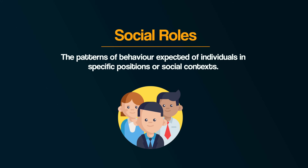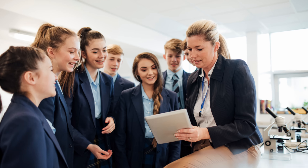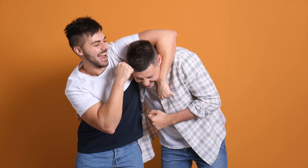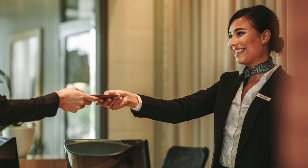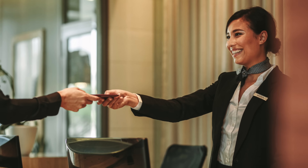Social roles are the patterns of behavior expected of individuals in specific positions or social contexts. Think of the different roles you switch between every day: as a student you may be respectful, formal, obedient to your teacher; as a friend you might joke, tease, share personal things; but as a customer or employee you stay polite, neutral, and professional.